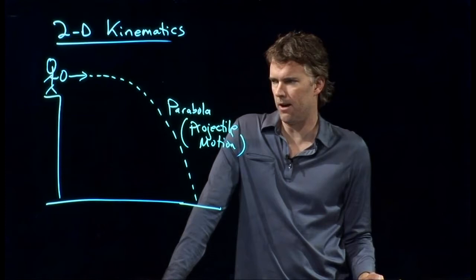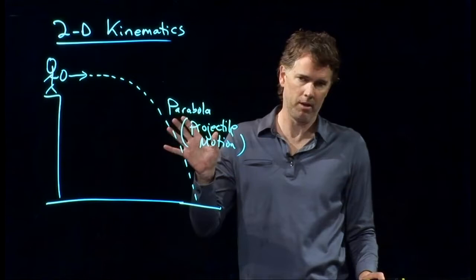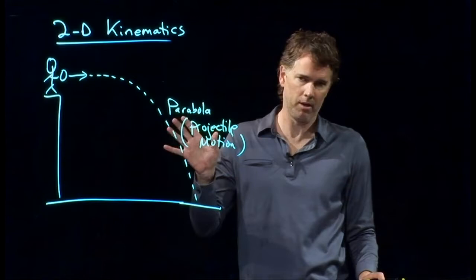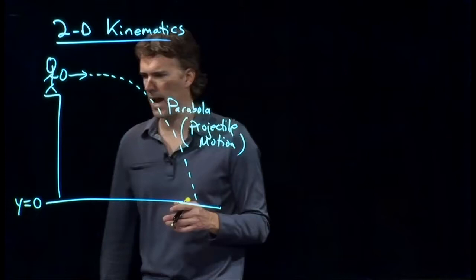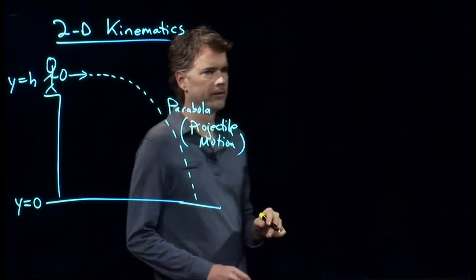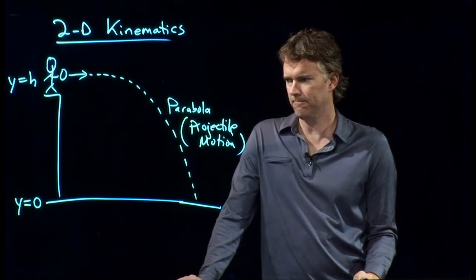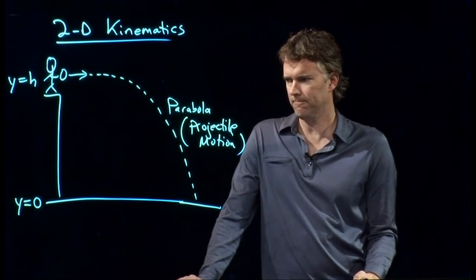Alright. So let's see if we can understand a little bit about this motion. Okay. This is, of course, the motion that governs a lot of things as they move around near the surface of the Earth. And so it would be nice to understand the problem. So, first off, let's draw a coordinate system. Let's say that y equals zero is down here at the ground. You can, of course, make that wherever you want, but that seems like a natural starting point. Where we launch the object from, let's say that is y equals h.